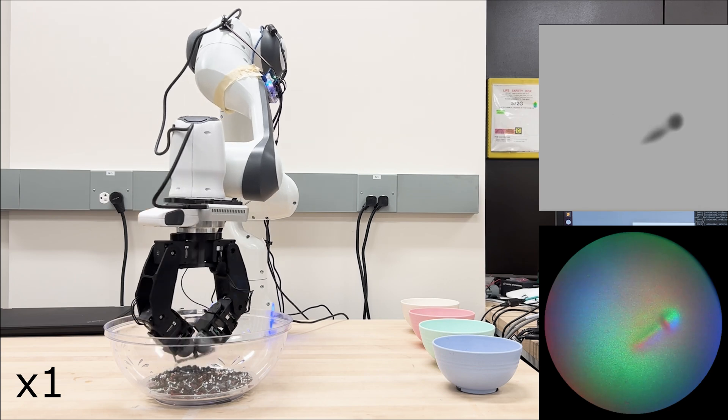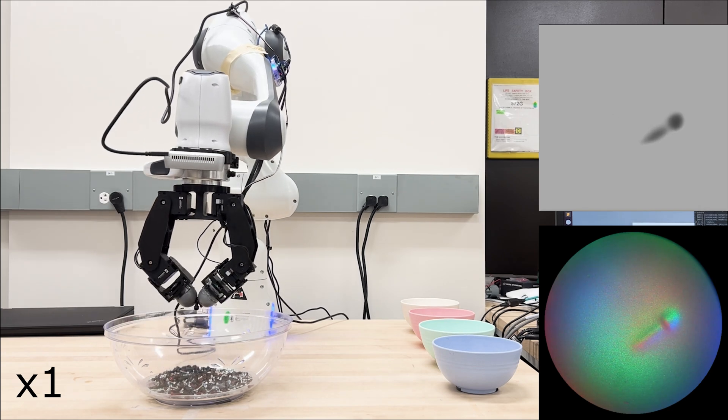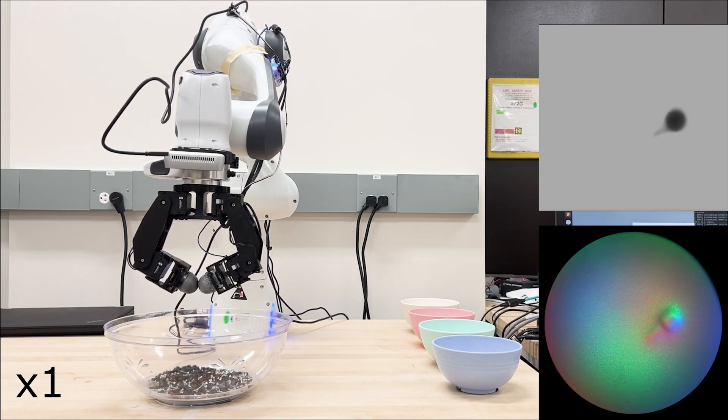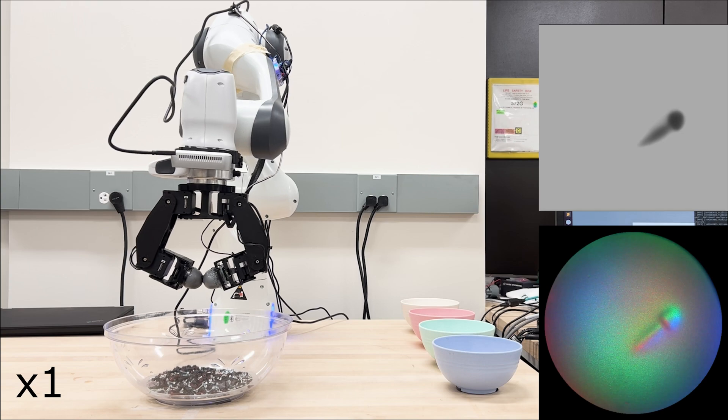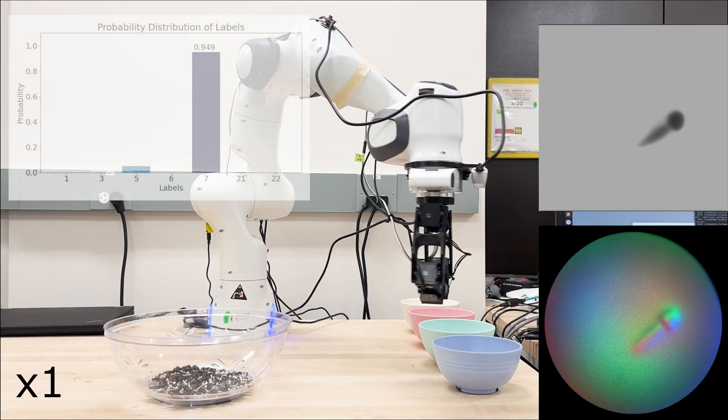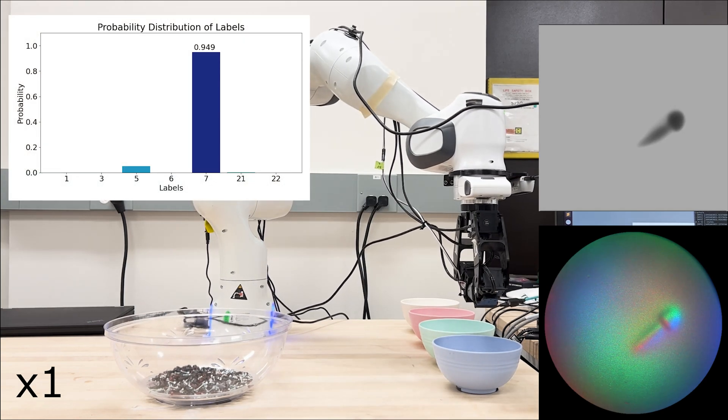After gripper grasps the object through the process, the gripper performs in-hand orientation, and then classifies the object. The screw is successfully classified.